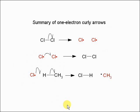In summary of one-electron curly arrows, we have a half-curly arrow meaning one electron. We can form radicals by breaking a covalent bond, destroy radicals by two radicals bumping into each other, and you can have radicals bumping into a molecule to form a new molecule and a new radical.